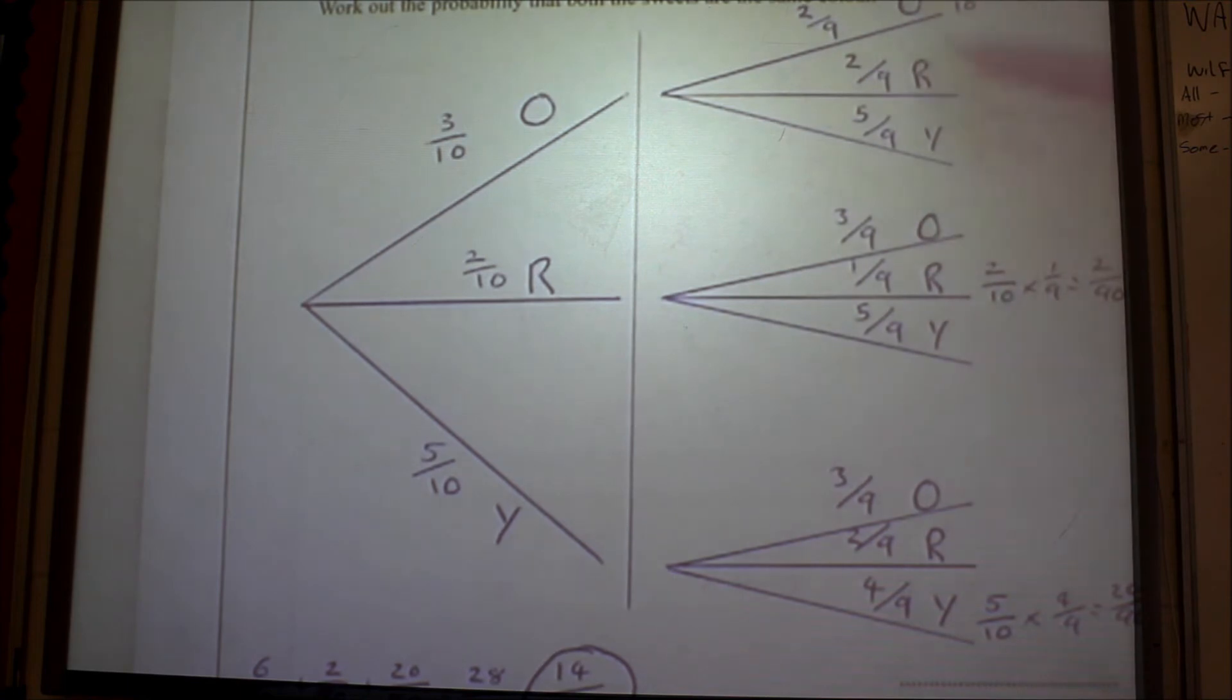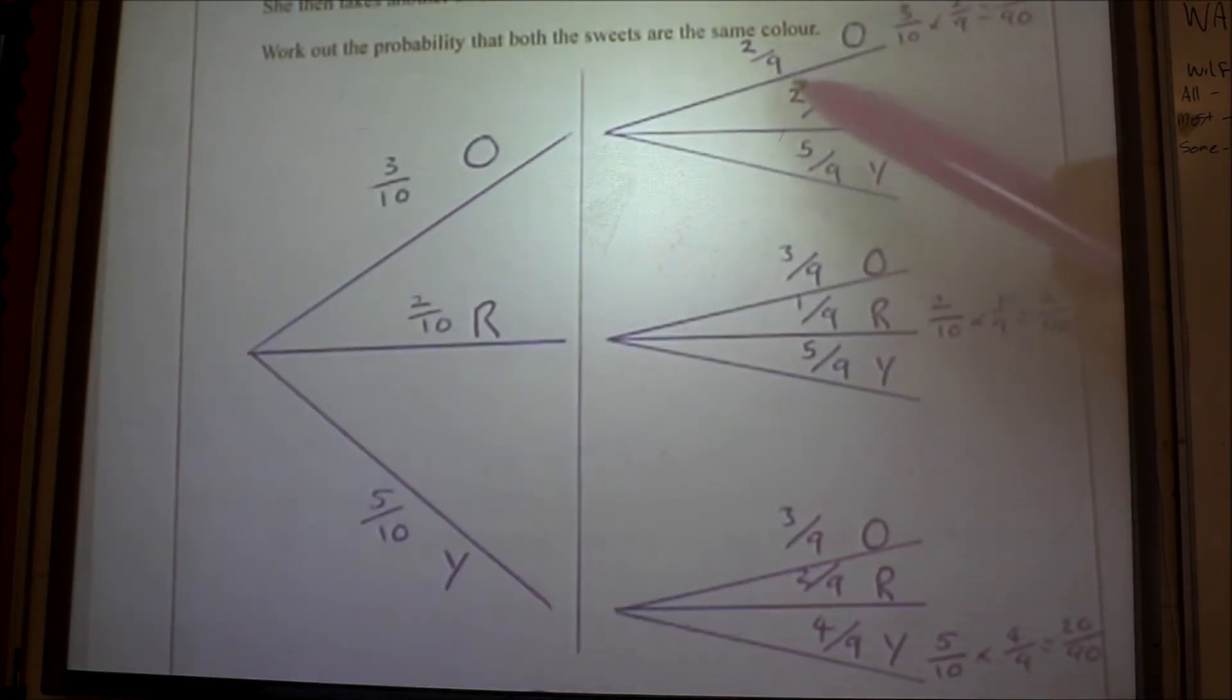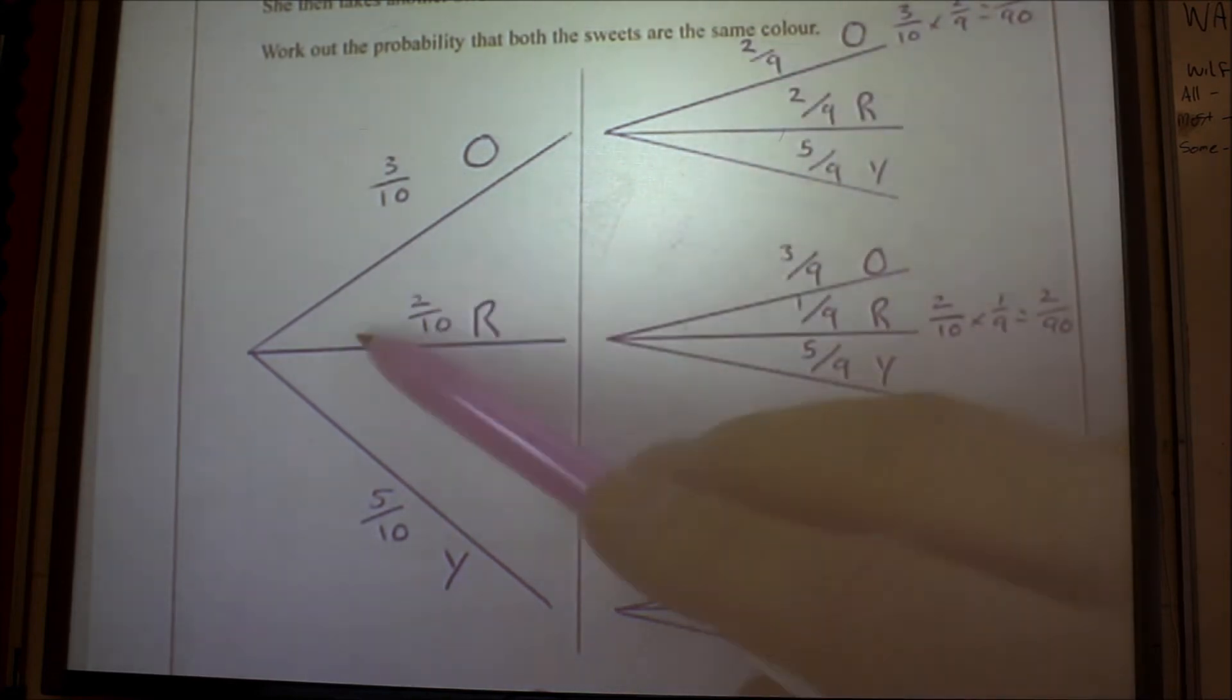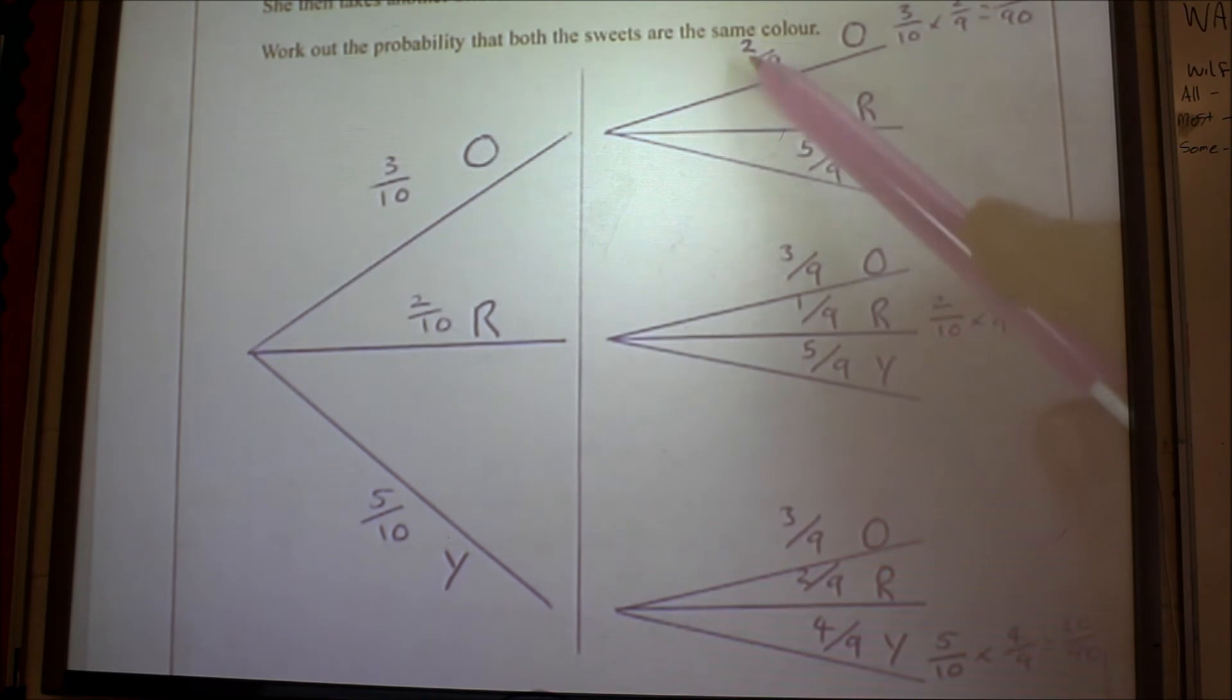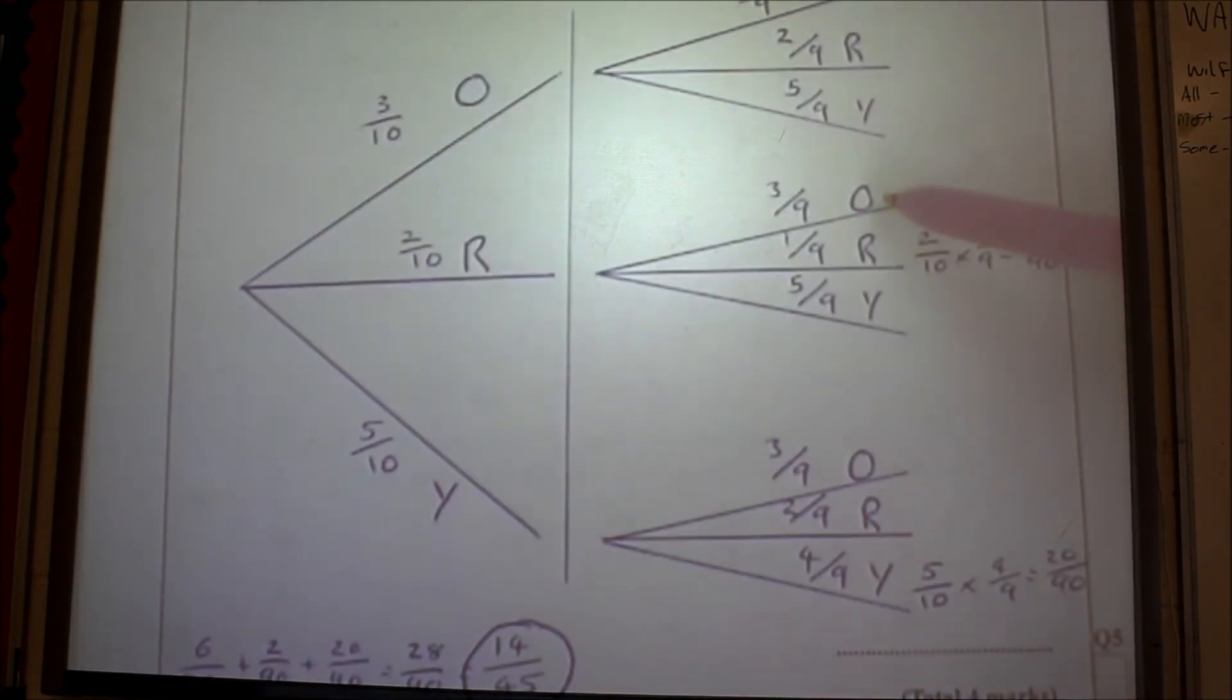The next bit is you need to complete it here. Now we know she eats it, so all of these will be something out of nine. This one here, there's only two orange ones left, because if you go along here, she's already eaten one orange one. So it's two out of nine, and these two stay the same. This one, the orange one stays the same, it's three out of nine, but she's eaten a red one, so only one red one left. And so on and so forth downwards.